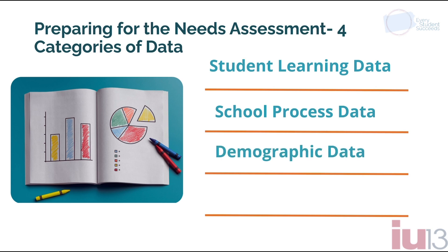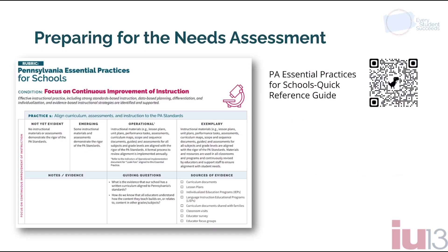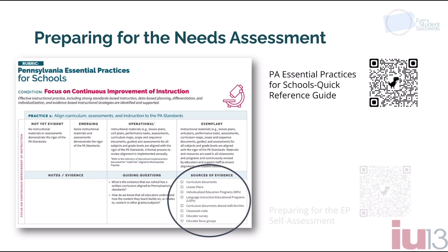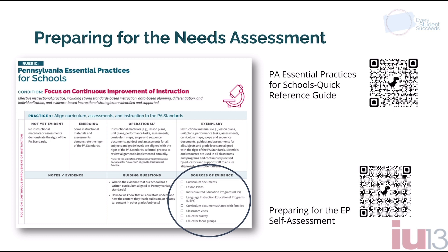Also, demographic data — they inform us about the structure of the school, the systems, and the leadership. Demographic data provide insight into the philosophy of the school through how students are disciplined, identified for special ed, gifted programming, AP courses, etc. And perception data tells us what people think about our school and the systems within it. There are two resources that highlight the specific sources of evidence that schools should be reviewing: the Pennsylvania Essential Practices for Schools Quick Reference Guide and the Preparing for the Essential Practice Self-Assessment document, which provides a list of all the range of sources of evidence to collect and analyze.